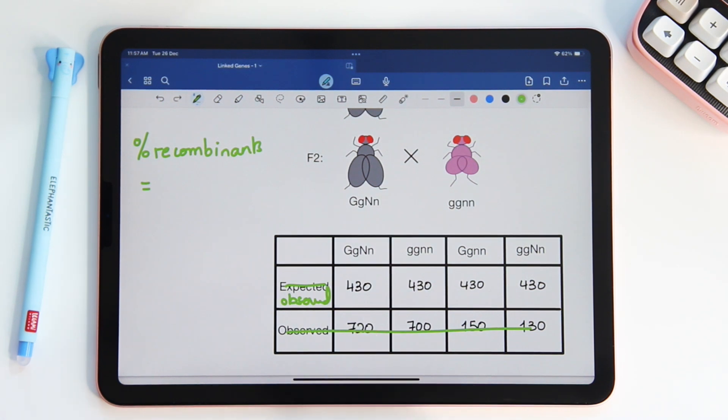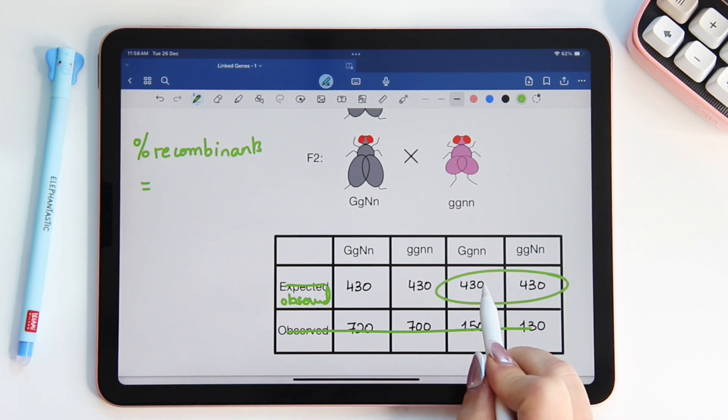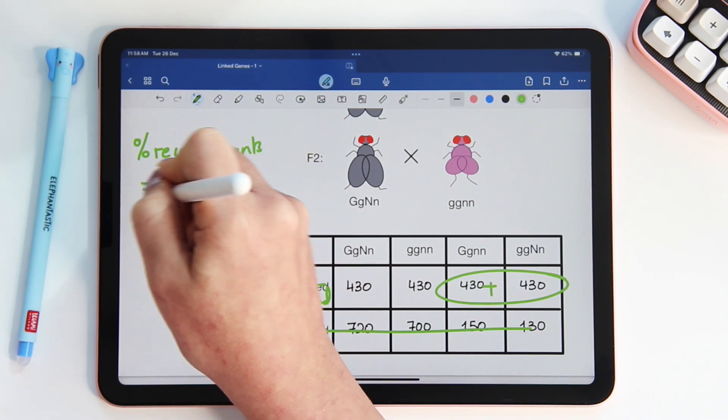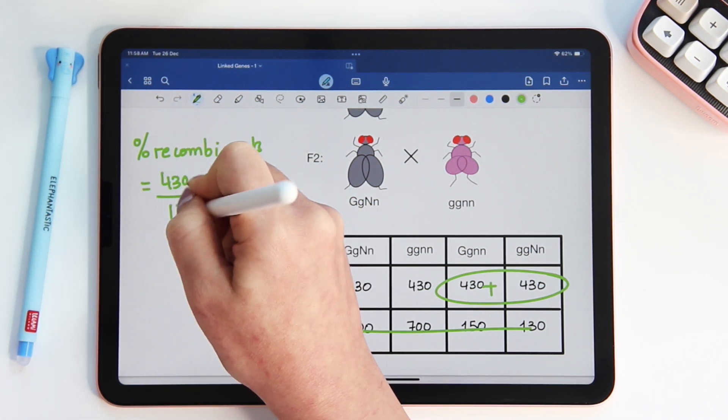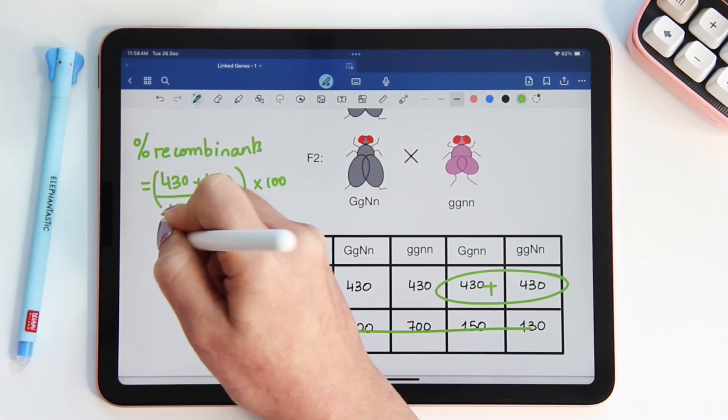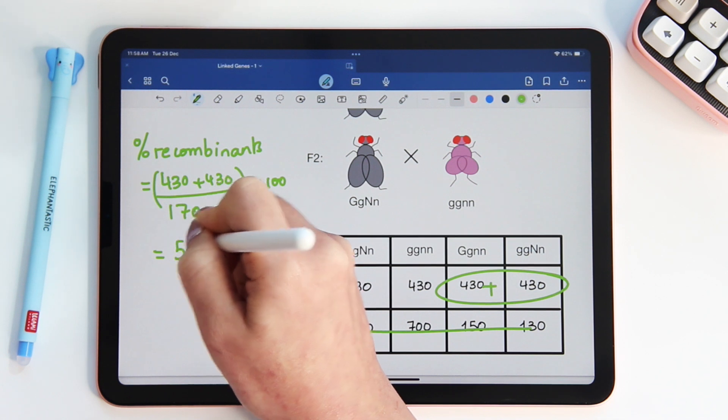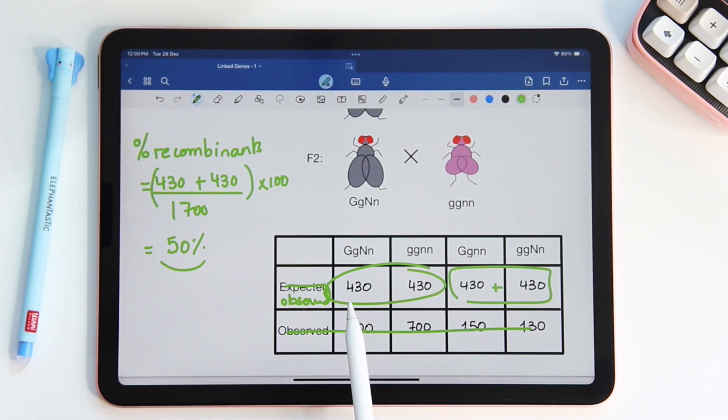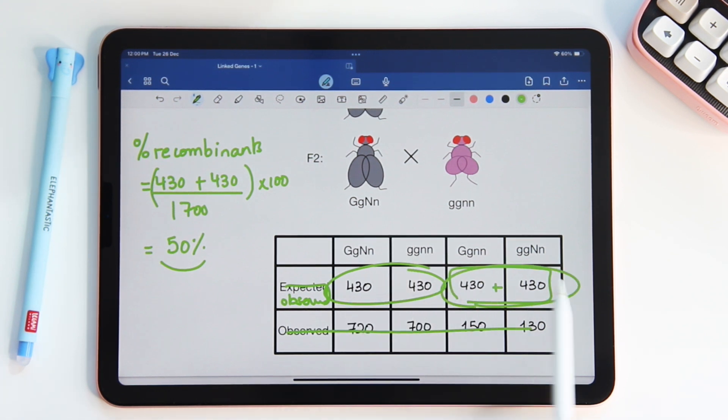Now, let's try to find percent recombinants. If we add the recombinant flies, that's in this case, 430 plus 430, and we divide that by the total, which is 1,700. Again, multiply that by 100, you get 50%. We knew we would get 50%, because if we look at the numbers, half of the flies are parental, and the other half have recombinant phenotypes.